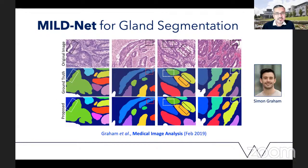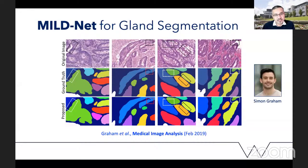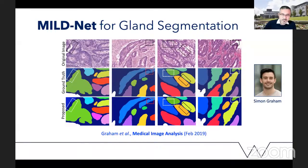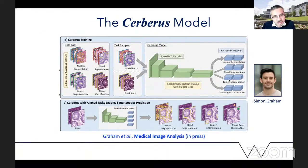Simon Graham also developed an algorithm for gland segmentation in colorectal cancer resections back in 2018 as part of his PhD in our group. Without going into technical details, this algorithm puts a contour around glandular objects and worked pretty well even for malignant glands that are completely deformed and start losing their shape. More recently, as part of his postdoc work, Simon led the development — a large team effort including several pathologists — bringing all these pieces together.